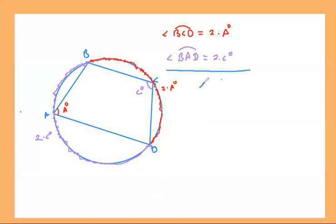If I add these two angles, that will give me arc measure of BCD plus arc measure of BAD, is equal to two times A degrees plus two times C degrees. And we know these two add up to 360, because that will make a full circle. And this is equal to two times, A degrees plus C degrees. If you divide by two, you will get 180 degrees equals A degrees plus C degrees.